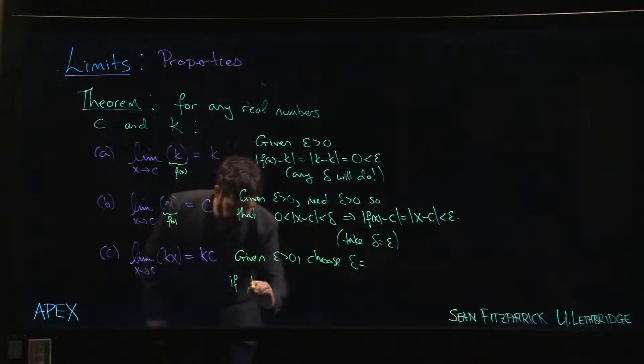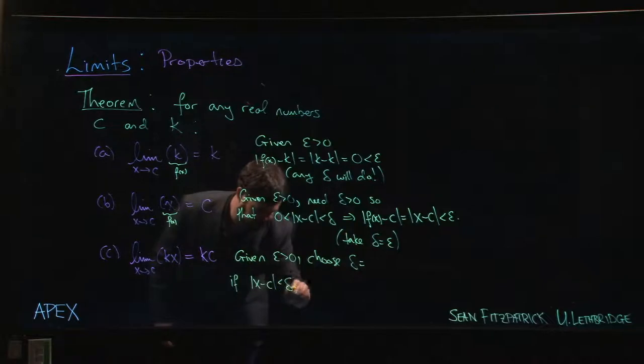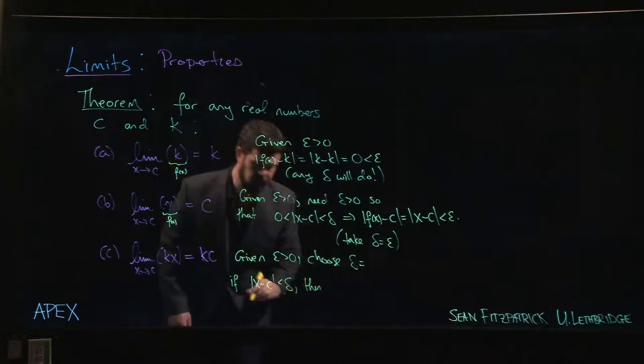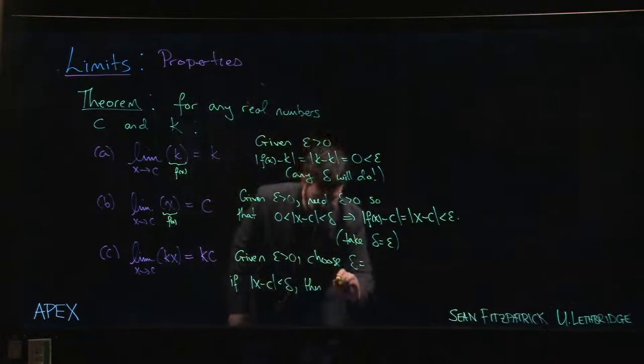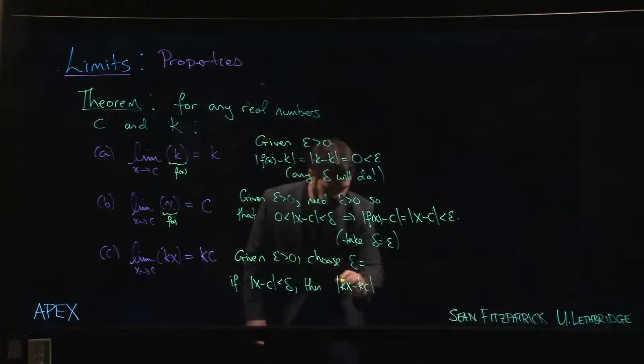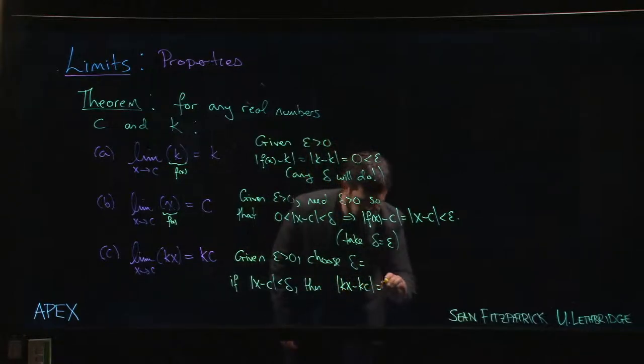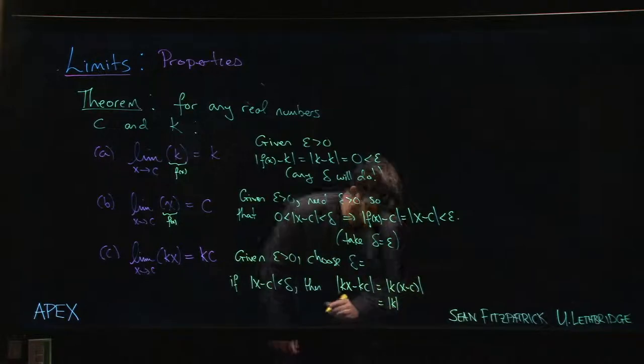So if the absolute value of x minus c is less than delta, then the absolute value of kx minus kc, well that's the absolute value of k times x minus c. That's the absolute value of k times the absolute value of x minus c.